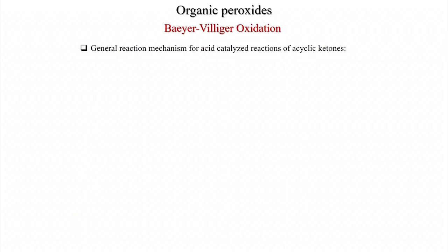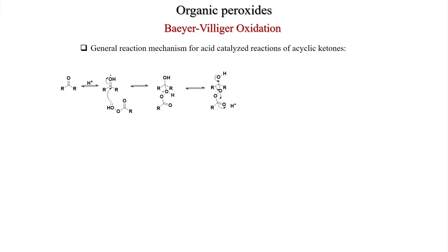Now the mechanism: in the acid-catalyzed reaction of acyclic ketones, the ketone is first protonated by the acid, then addition takes place to the activated carbonyl moiety to give a hemiacetal peroxy intermediate. This is the rate-determining step — migration happens, the OH becomes a carbonyl, and one group migrates by attacking oxygen while the leaving group departs. The acid is the conjugate base, or the leaving group here.